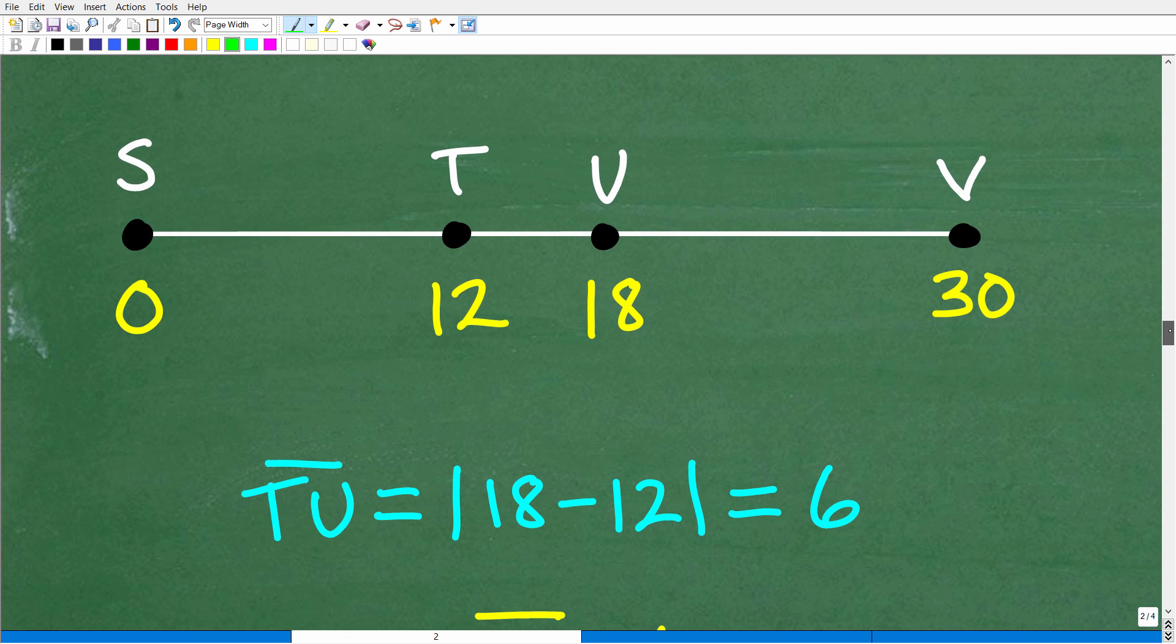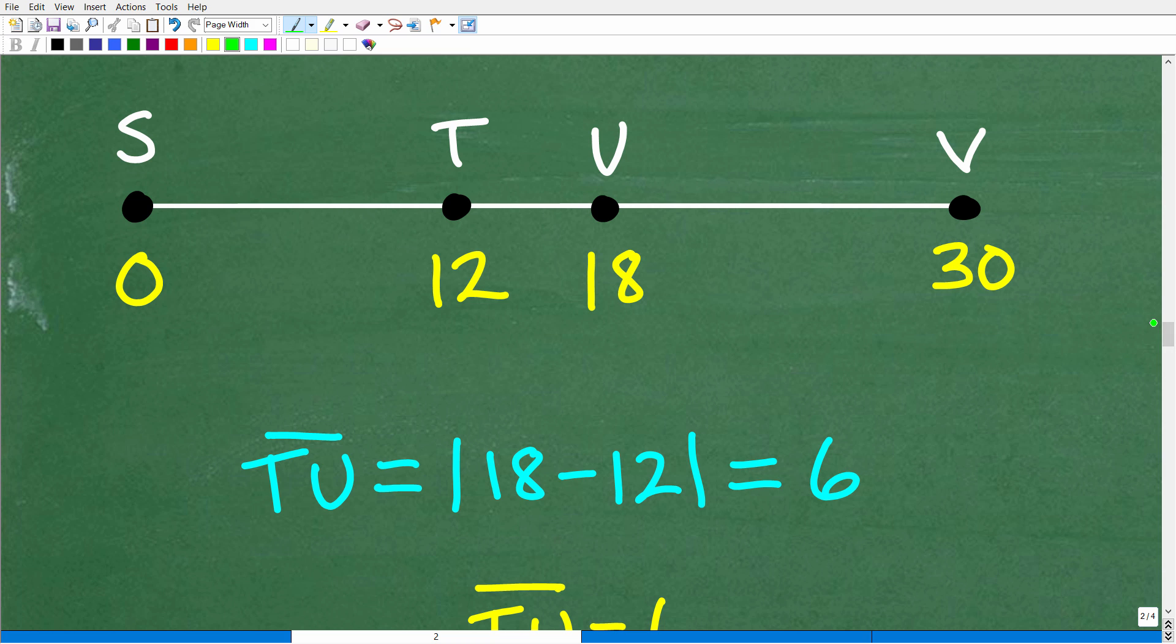And now we see that this is pretty straightforward. So S is at zero. T is at 12 on a number line. U is 18. And V is 30. So if I asked you with this information, what's the distance between T and U? You would say, oh, I know what that is.